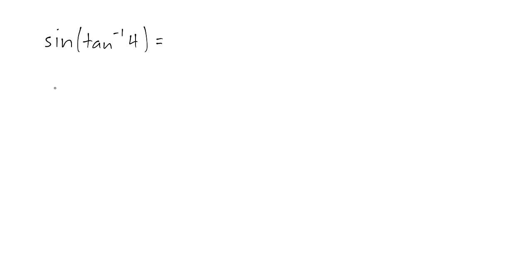Alright, so sine of some angle, and we know that angle theta is equal to tangent inverse of 4. So that means that tangent of theta is equal to 4, which we said could be written as 4 over 1. Again, we just need to figure out what x is, what y is, and of course, what r is.